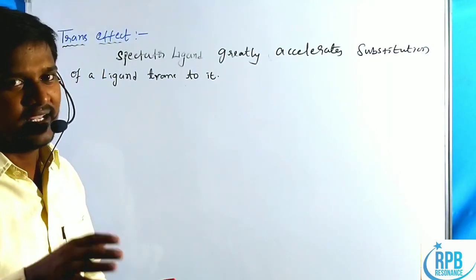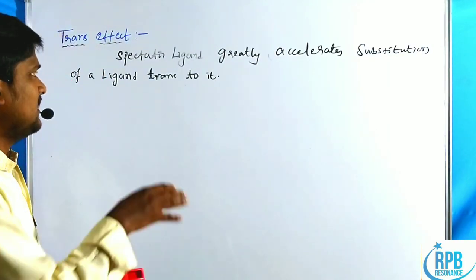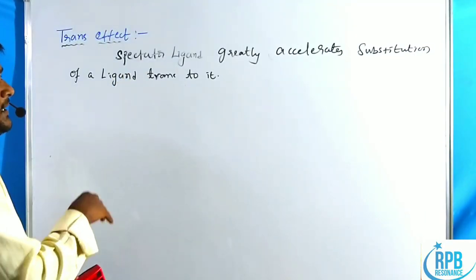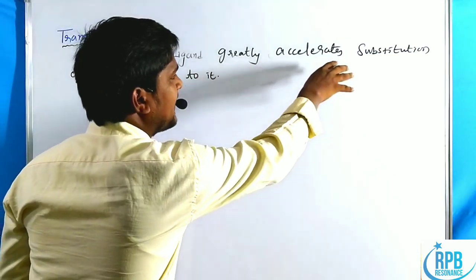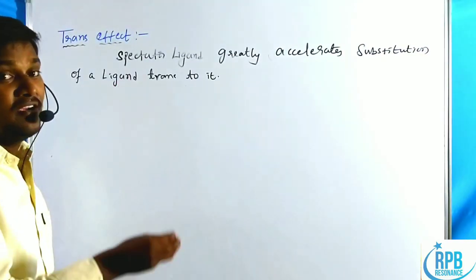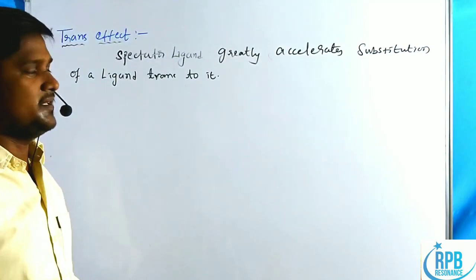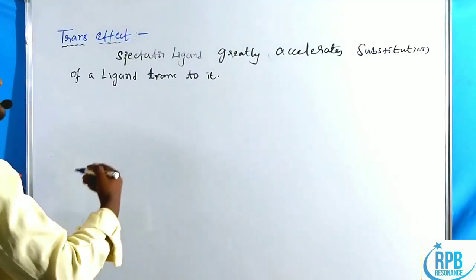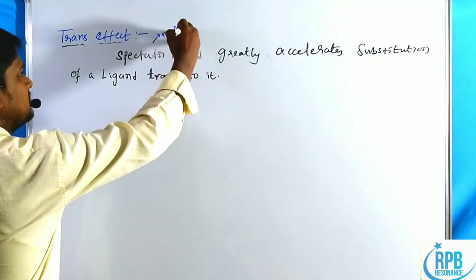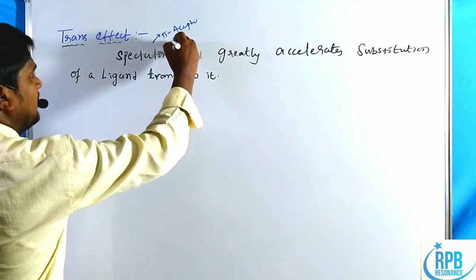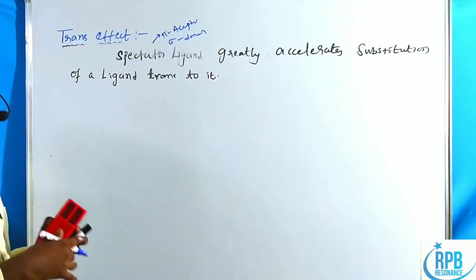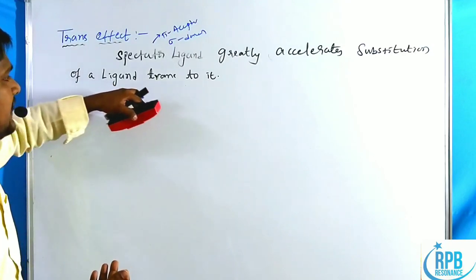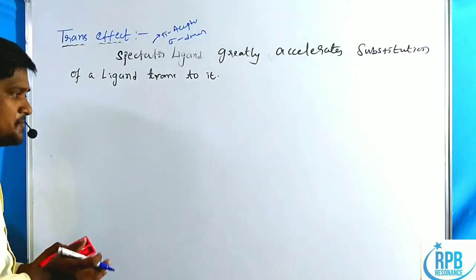Generally, the trans effect indicates the influence of a spectator ligand — which greatly accelerates the substitution reactions of a ligand trans to it. Generally, spectator ligands are pi acceptor ligands as well as sigma donor ligands. Those ligands accelerate the substitution of a ligand trans to their position.